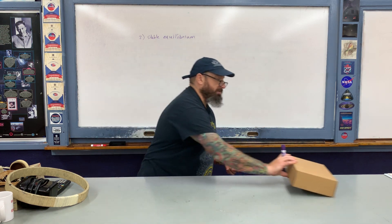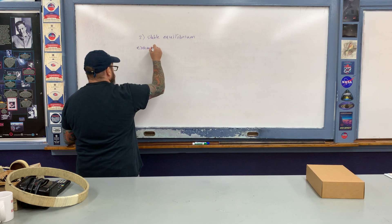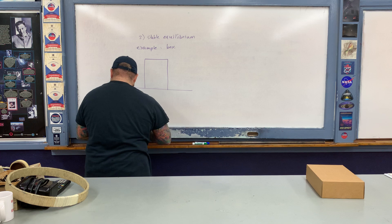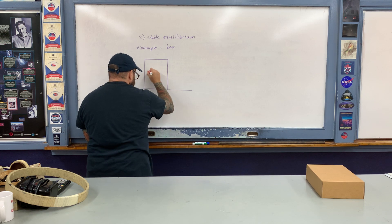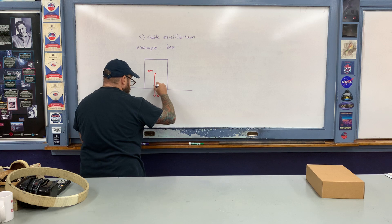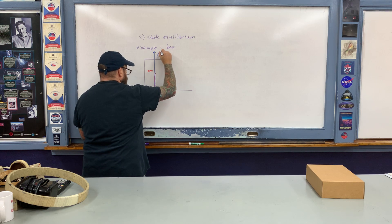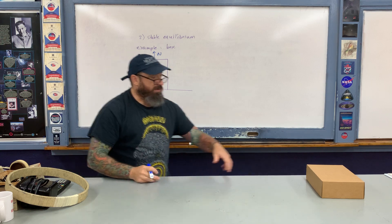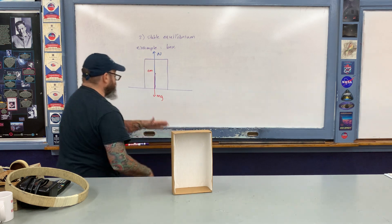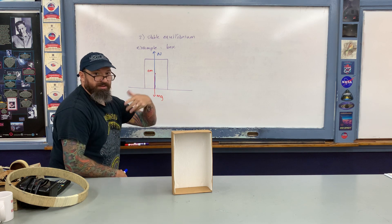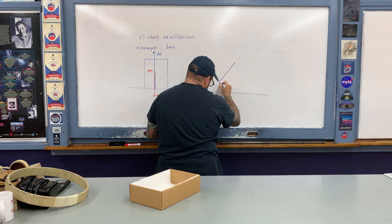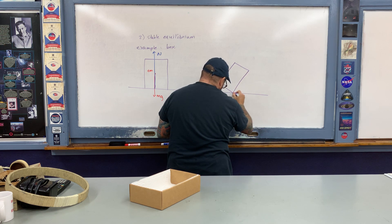Let me illustrate here in terms of a simple drawing with the box. Here's the box, and right here in the geometric center is its center of mass. Here is mg, and then the normal force goes upwards through the center of mass in blue. Those two forces just cancel each other out. Then I took the box and tipped it a little bit to the side, and the center of mass is still going to be on the left-hand side of the pivot.